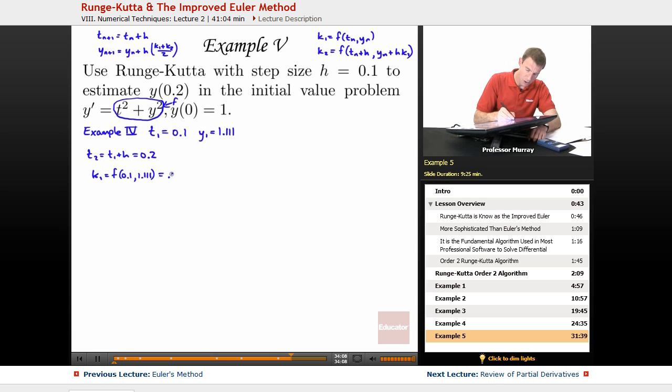And so, this is 0.1 squared plus 1.111 squared. And I don't think I want to do that by hand. I'm just going to plug that into my calculator. So, 0.1 squared plus 1.111 squared is 1.244321.